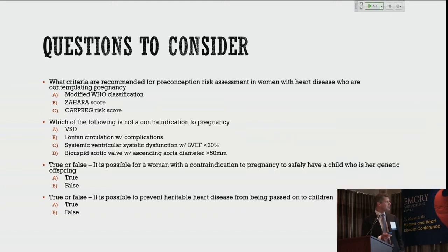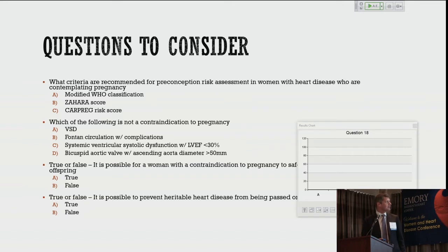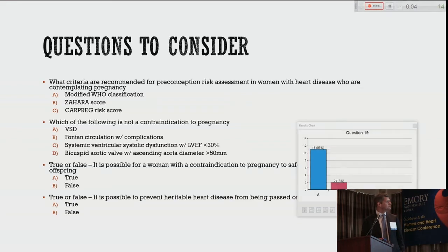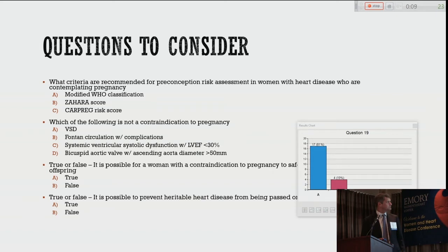Question three, true or false: is it possible for a woman with a contraindication to pregnancy to safely have a child who is her genetic offspring? I see a lot of 'true,' and the answer is yes — we'll talk about how.